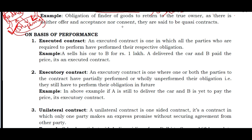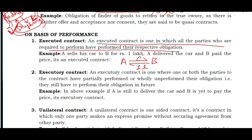Executed Contract: An executed contract is one in which all the parties who are required to perform have performed their respective obligations. A had decided to sell his car to B for 1,00,000 rupees. When A actually delivered the car to B and B paid A the 1,00,000 rupees, no party has any obligation remaining under the contract. It becomes an executed contract - all parties have performed their obligations, nothing is left to be done. So the contract has already been executed - it is an executed contract.